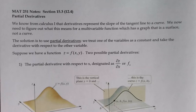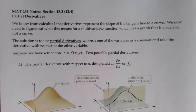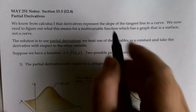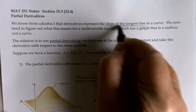This is Math 251, section 12.4 on partial derivatives. As we start to think about how to take derivatives of a multivariable function, I'd like to go back to the interpretation we knew for derivatives from Calculus 1. Specifically, from Calc 1 we always said the derivative represented the slope of a tangent line.